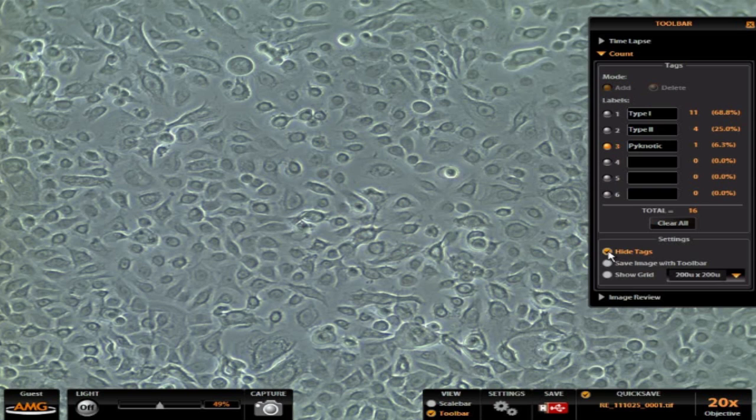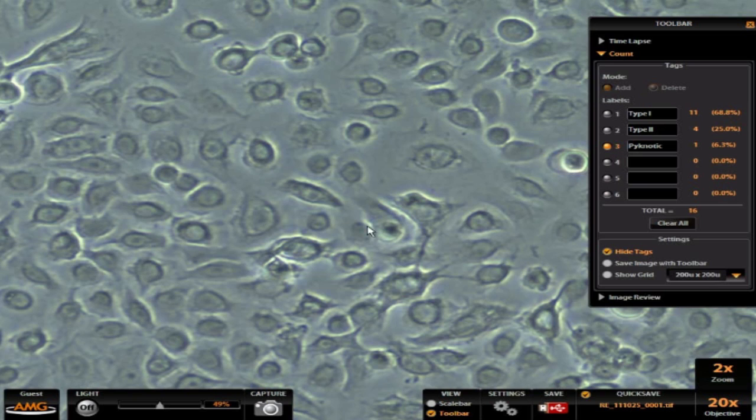I can just click this button here that says hide tags and now double clicking is going to zoom an area. And then I turn the tags back on and I can see them and continue counting my different cell types here, my type 1 cells.